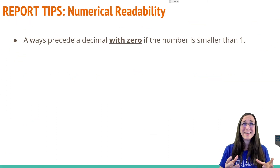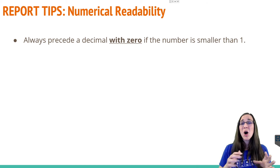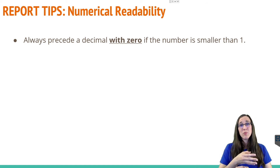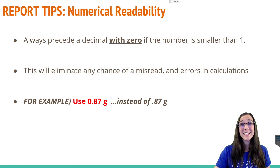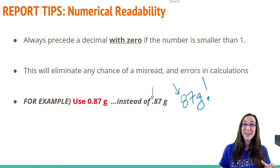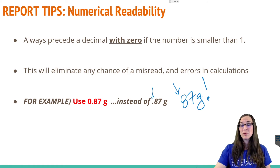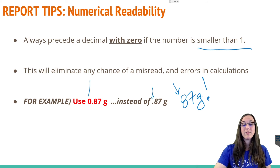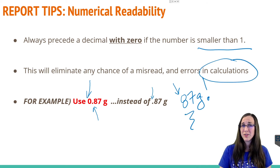Here's a tip that really kicks you in the pants if you don't follow it, especially in college lab reports. Always precede a decimal value smaller than one with a zero. It's easy to write 0.87 grams correctly once, then later forget the decimal and write 87 grams — a huge difference when someone else is trying to reproduce your lab. Anytime you have a value smaller than one, put a zero in front of it so you don't lose that decimal point in your calculations.